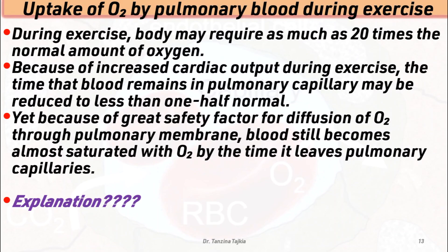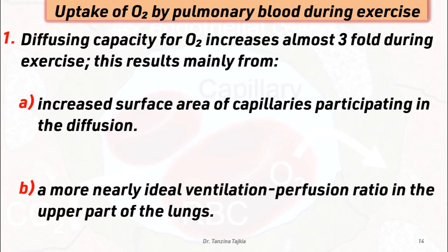During exercise, the body may require as much as 20 times the normal amount of oxygen. Because of increased cardiac output during exercise, the time that blood remains in the pulmonary capillary may be reduced to less than one half of normal. Yet because of the great safety factor for diffusion of oxygen through the pulmonary membrane, blood still becomes almost saturated with oxygen by the time it leaves the pulmonary capillaries.